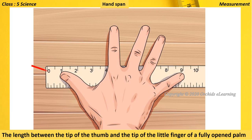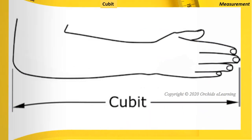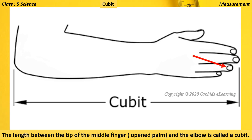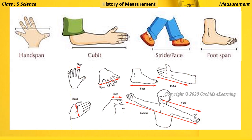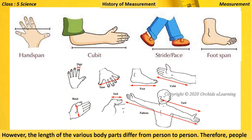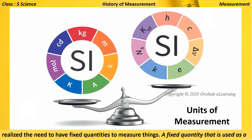The length between the tip of the thumb and the tip of the little finger of a fully opened palm is called a hand span. The length between the tip of the middle finger of an opened palm and the elbow is called a cubit. A fathom is the length of outstretched arms. However, the length of various body parts differs from person to person, so people realized the need for fixed quantities. A fixed quantity used as a standard of measurement is called a unit.